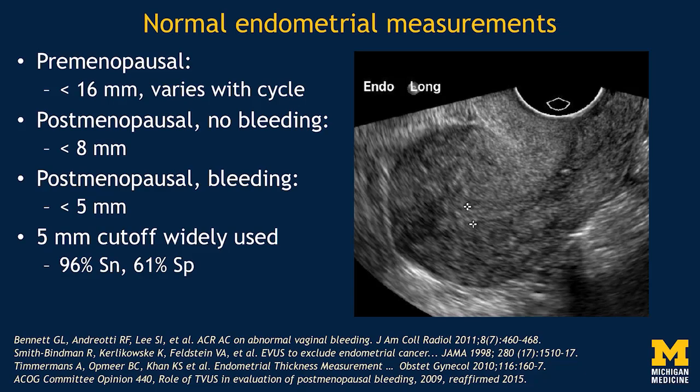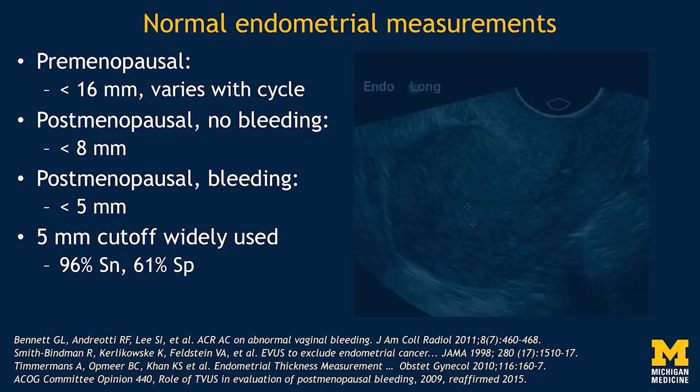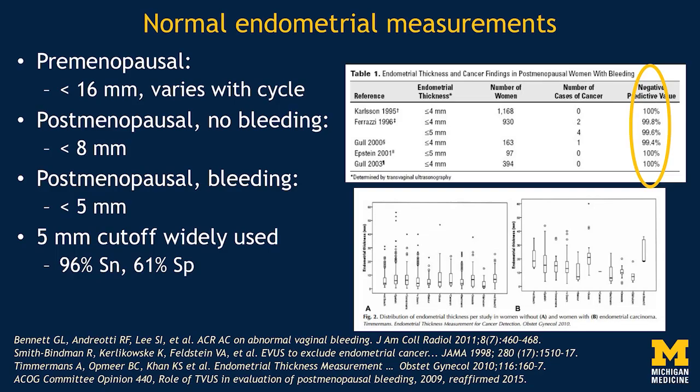The risks of in-office pipel biopsy are super low, so maybe it's better to drive that sensitivity even higher. Many investigators have toyed with other thresholds like four millimeters, even as low as three millimeters. The problem is there's a huge amount of overlap between women who have cancer and women who actually have normal endometrial tissue at biopsy in terms of thickness. By driving that threshold down to three millimeters, we increase sensitivity to 98%, but we drive down our specificity to 35%. Generally speaking, that five millimeter threshold is the number to remember for a postmenopausal woman with abnormal bleeding.